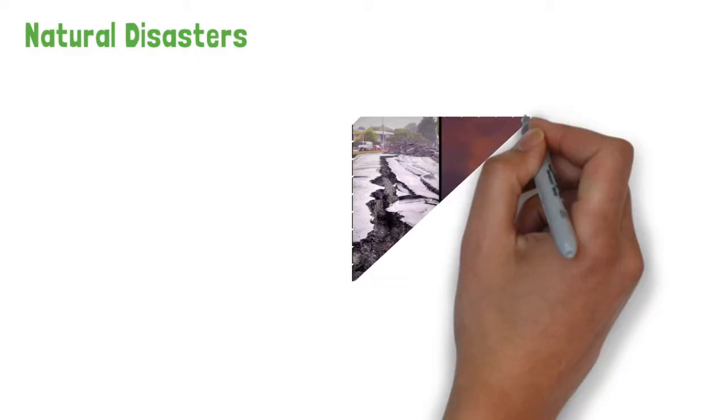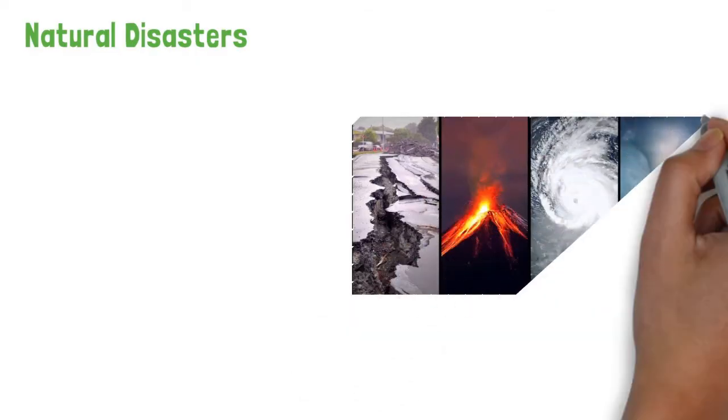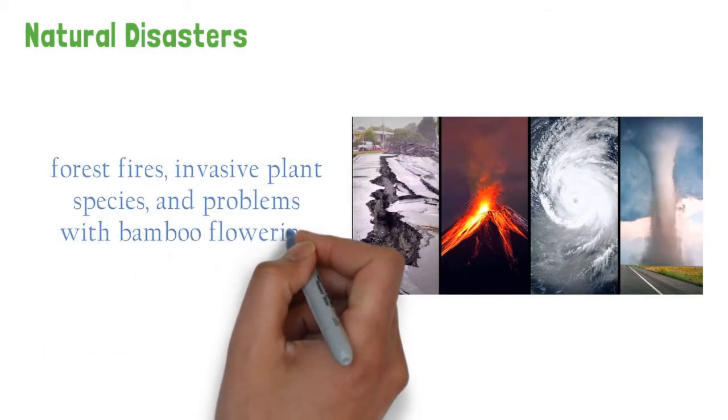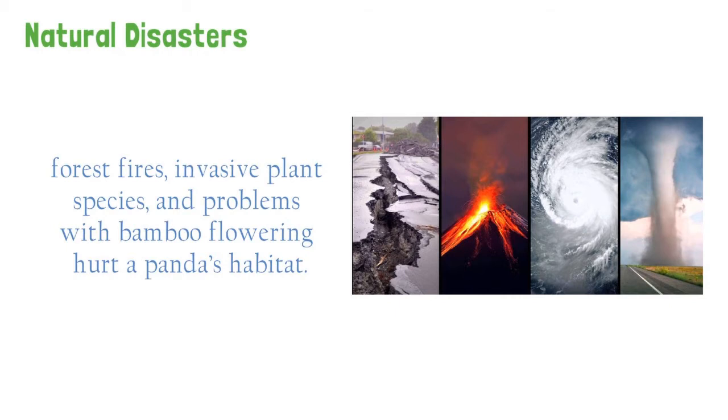Natural disasters. Things like landslides, floods, tornadoes, heavy snow, and rainfall destroy habitats. A habitat is where an animal lives. Also, forest fires, invasive plant species, and problems with bamboo flowering hurt a panda's habitat.